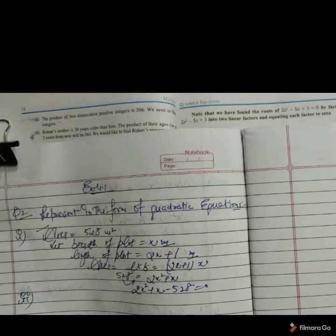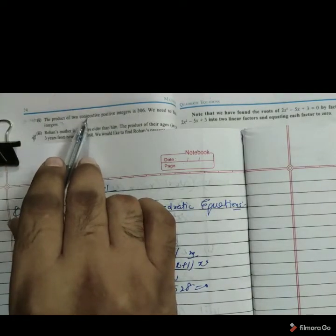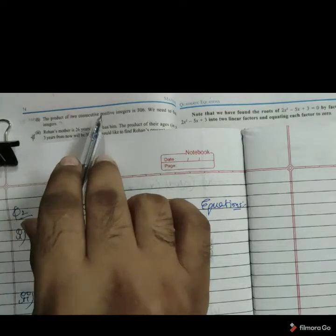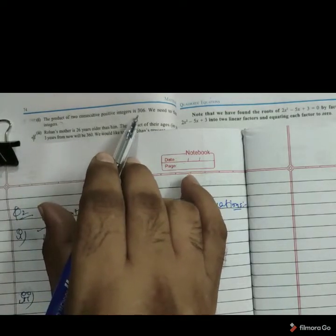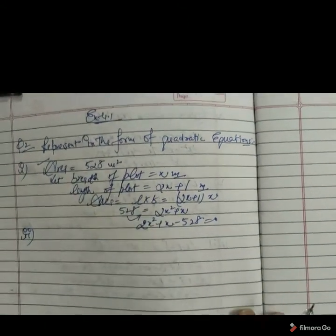In next part we have given the product of 2 consecutive. Consecutive means they are having a difference of 1 only. These are positive integers. Their product is given by 306. We have to represent it in the form of quadratic equation.